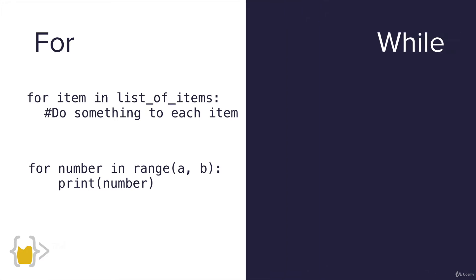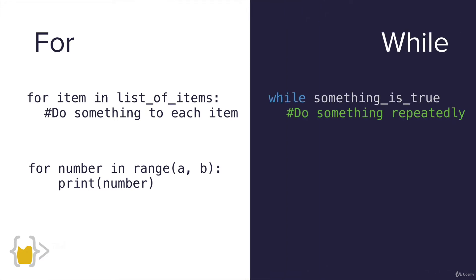The while loop looks something like this. While a particular condition is true, we go inside the loop and do something repeatedly. It's only when that condition becomes false that the loop stops.